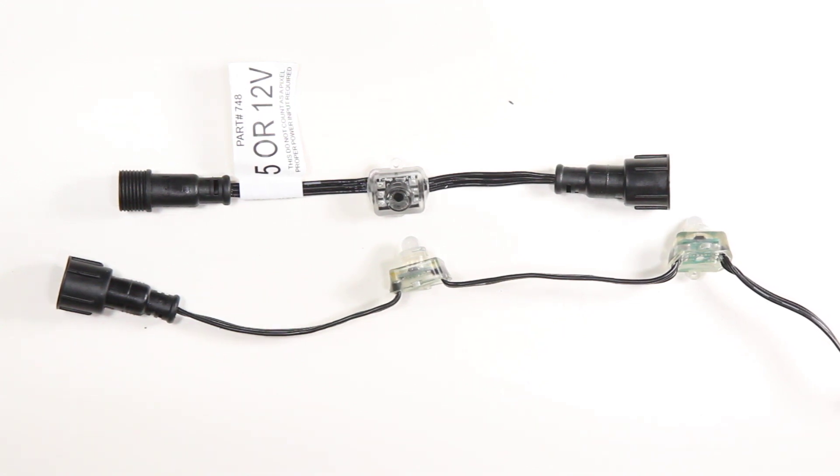This is why you'll sometimes see pixels used in products where we want to go long distances, such as house outlines. And you'll see 5 volt used in matrix panels or megatrees, where you have lots of pixels all close together in a very short physical distance.